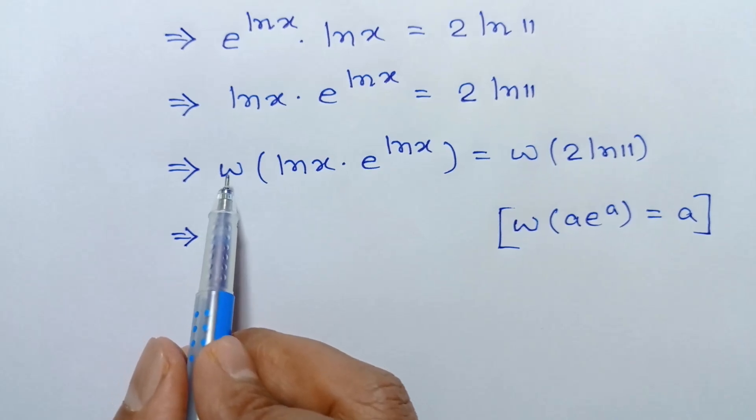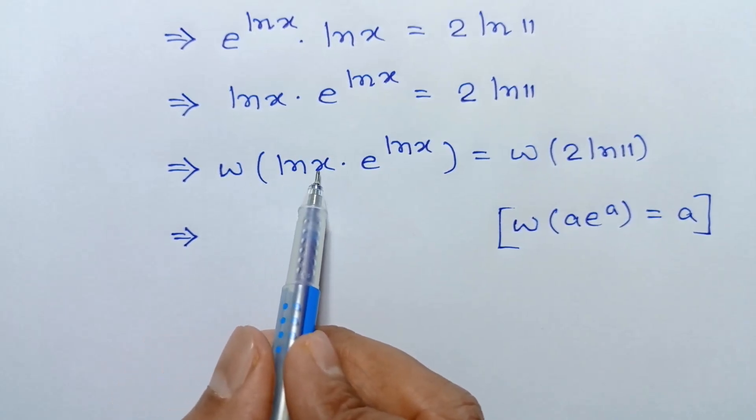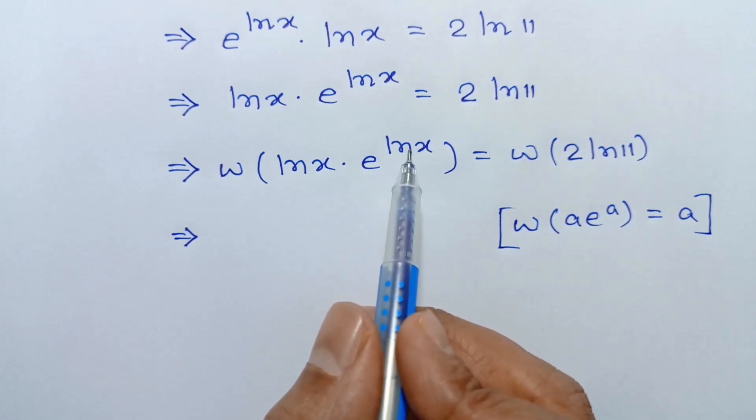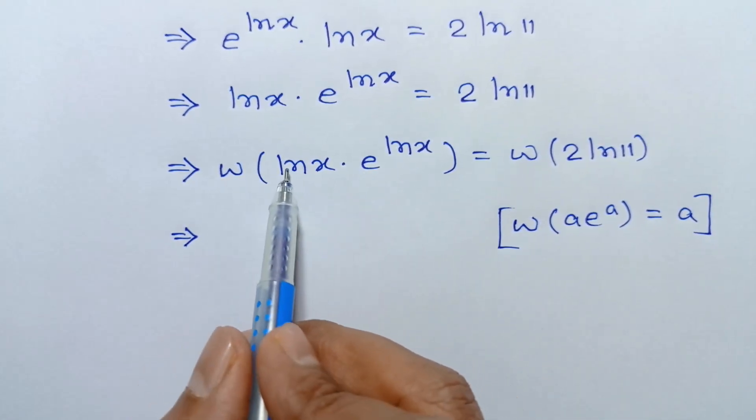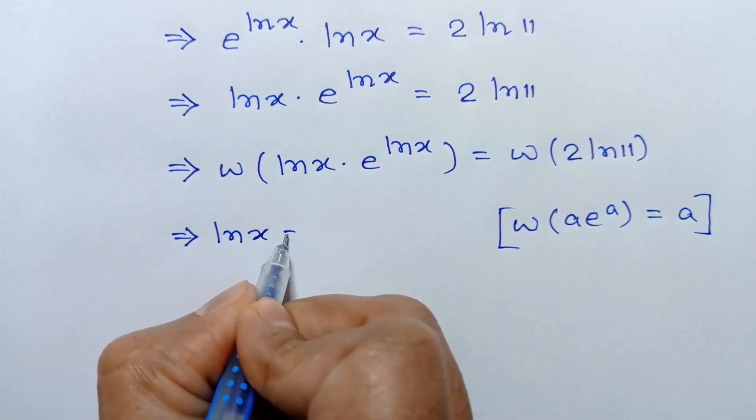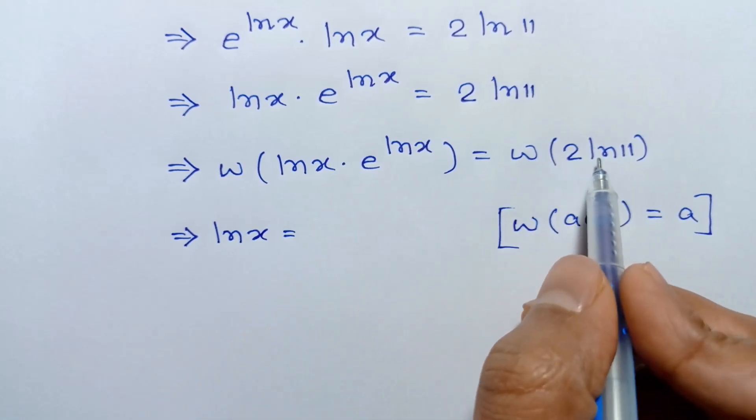We can write W of ln x as A, e to the power as A, so we can write it as ln x. Therefore, ln x equals W of 2 ln 11.